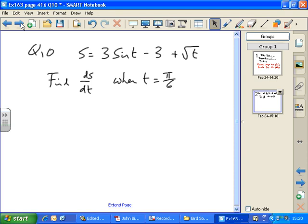So the first job is to differentiate the function, and then once you differentiate it, put t equals pi over 6 in and evaluate ds/dt.